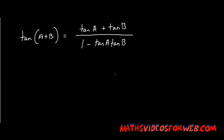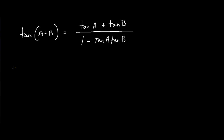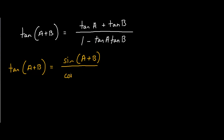Hi, in this video I'll be proving why tan(A+B) equals tan A plus tan B over 1 minus tan A multiplied by tan B. First of all, tan(A+B) equals sine(A+B) over cos(A+B).